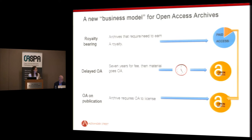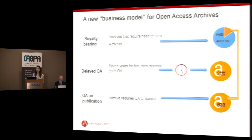Our third model is what we're calling our sponsored model. This is an initiative we're undertaking as a company where we're essentially taking 10% of the revenue that comes from subscriptions in the first model and putting it into an open access pool. With this pool, we're digitizing content. We've just launched our first collection in this model — the Ruth Benedict Papers.